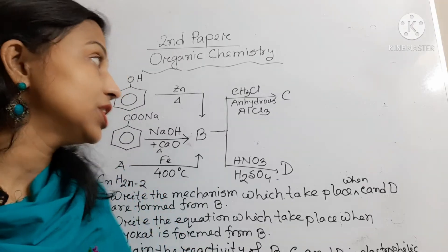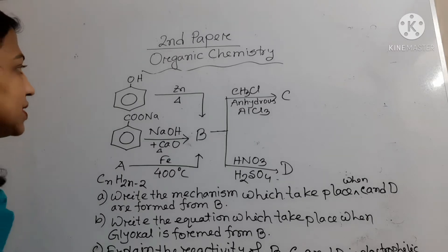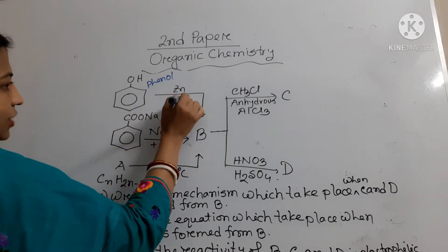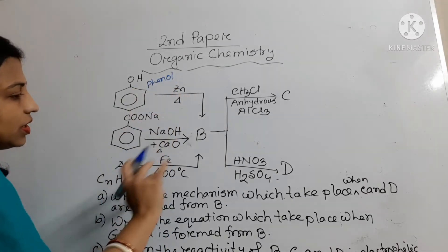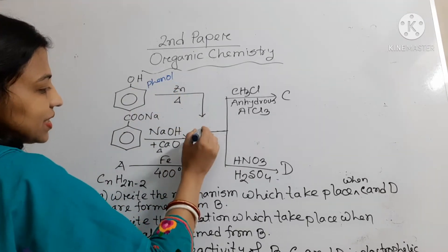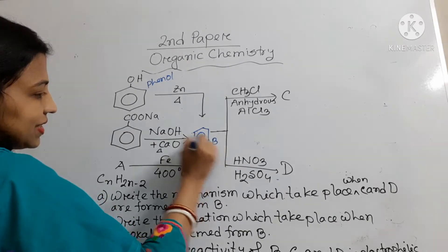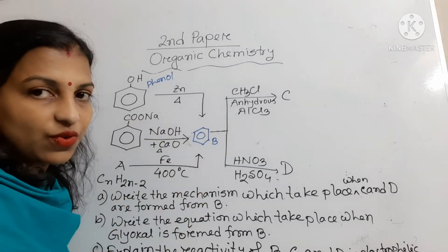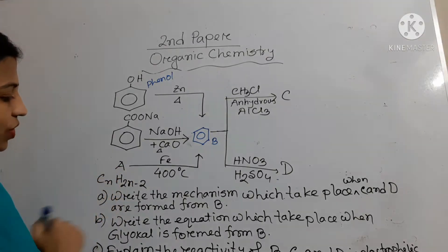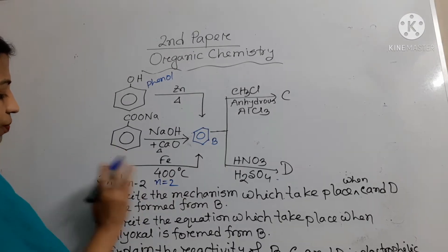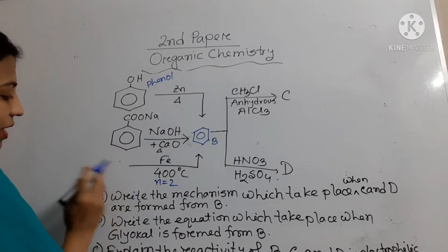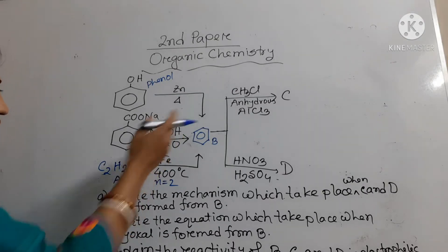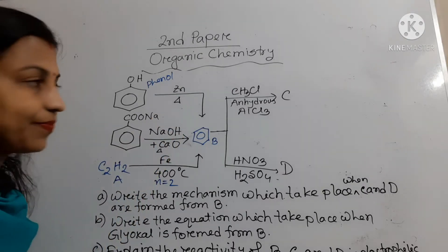My creative question involves phenol. When phenol reacts with zinc at 400 degrees Celsius, the product B is benzene. When sodium benzoate reacts with soda lime, benzene is also formed. Compound A has the formula CnH(2n-2), and when n equals 2, A will be C2H2. When C2H2 reacts with iron at 400 degrees Celsius, benzene is also formed.